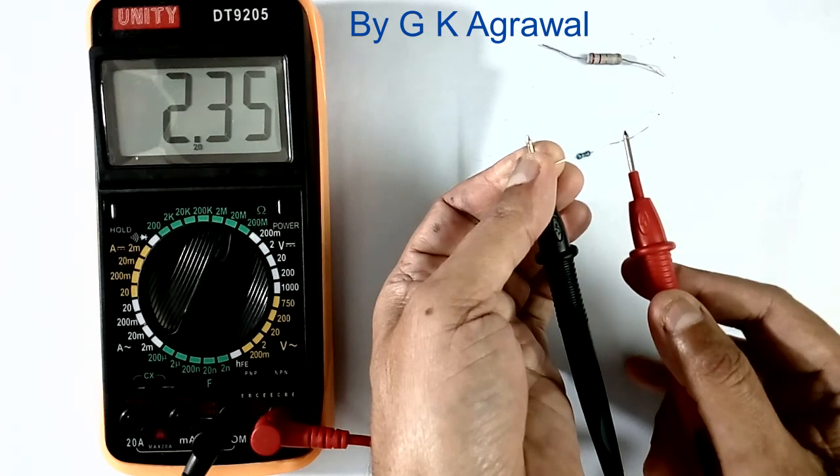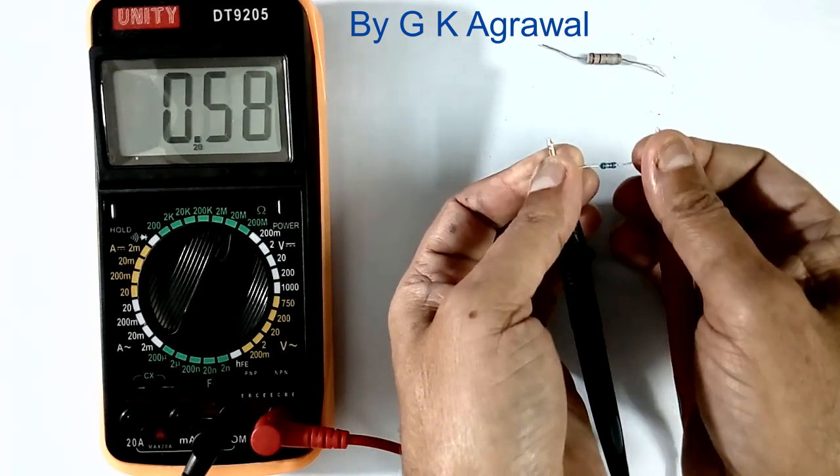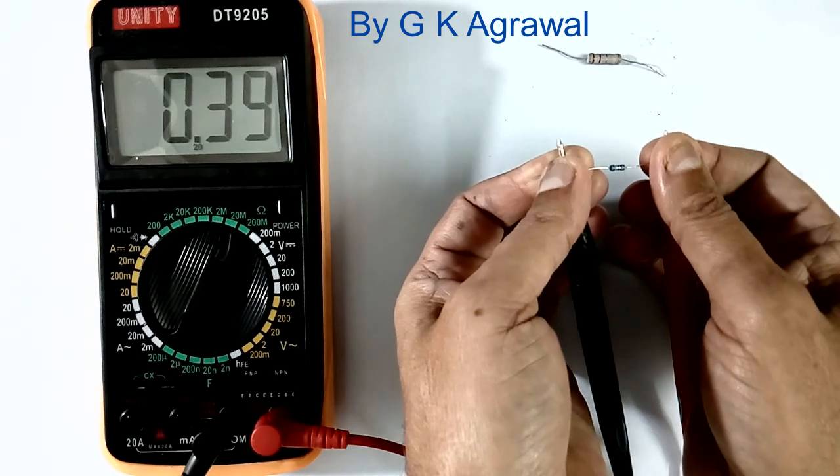Then the correct value will come. It is showing 2.35. If we do like this, then body resistance also will come. It will show low value, it is giving error.